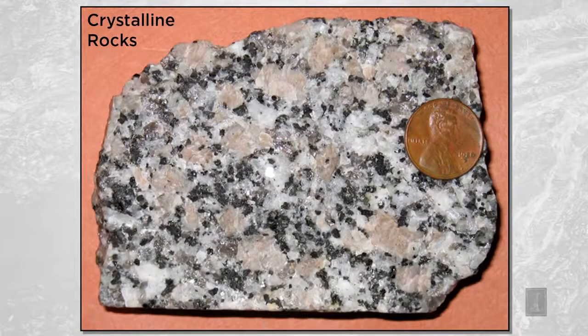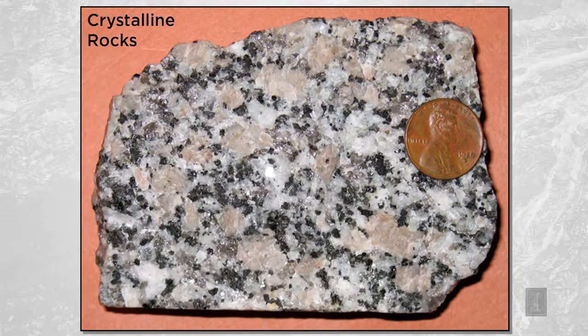Here's an example of a crystalline rock. This happens to be a kind of rock called a granite, in which all the grains — there are several different kinds of grains in here, different minerals represented by different colors — they're all intergrown like pieces of a jigsaw puzzle. Now, when molten rock solidifies, it does not form a single mineral crystal. Rather, it forms lots of mineral crystals, so it's an aggregate of many grains or crystals.